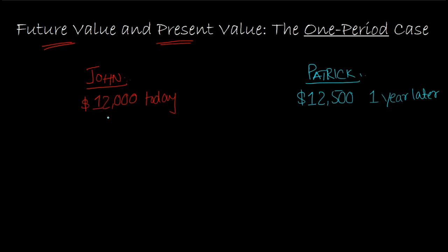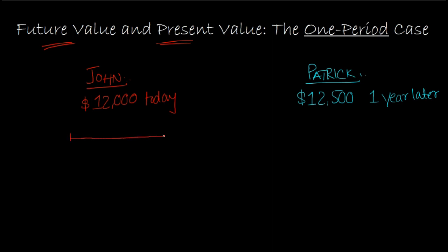One thing I recommend to all my students is to depict cash flows on what is referred to as a timeline. A timeline is a graphical representation of cash flows occurring at different points in time. A simple timeline would represent time, where this point is called time period zero — this is where you are today, where you're selling your bike.